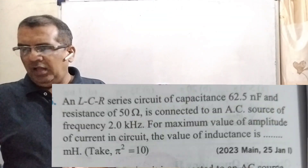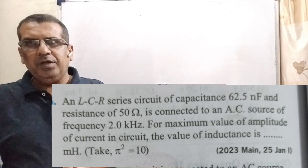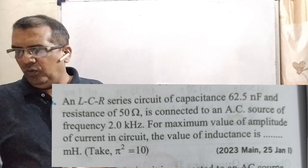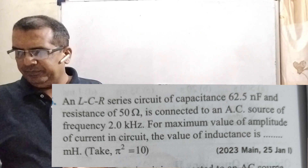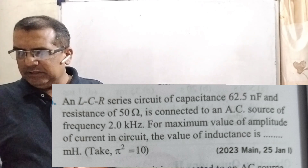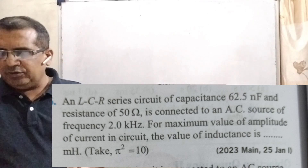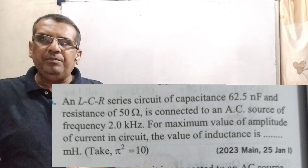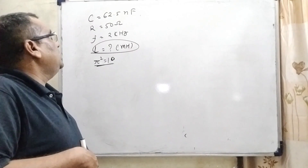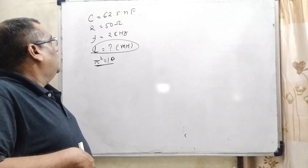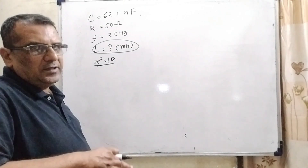Next question: An LCR series circuit of capacitance 62.5 nanofarad and resistance of 50 ohm is connected to an AC source of frequency 2 kilohertz. For maximum value of amplitude of current in the circuit, the value of inductance is to be found in milli-henry. Take pi-square equal to 10. All given information: C = 62.5 nanofarad, R = 50 ohm, f = 2 kilohertz, and we have to find inductance L in milli-henry.